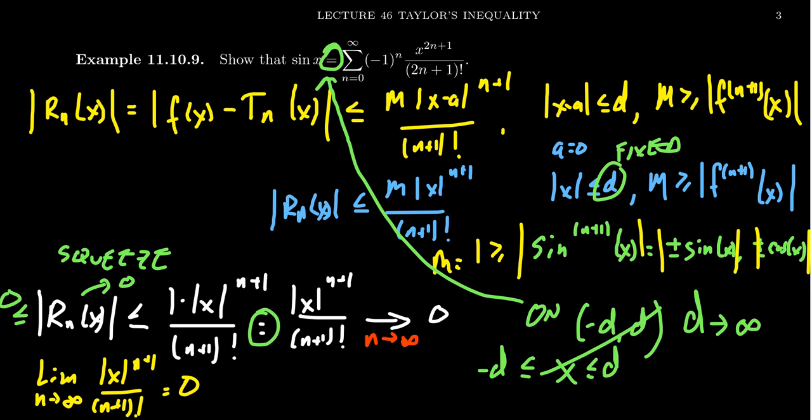And when r_n of x approaches 0, that tells you that your function is equal to its Maclaurin series. So in fact, we see that sine of x is equal to its Maclaurin series right here.